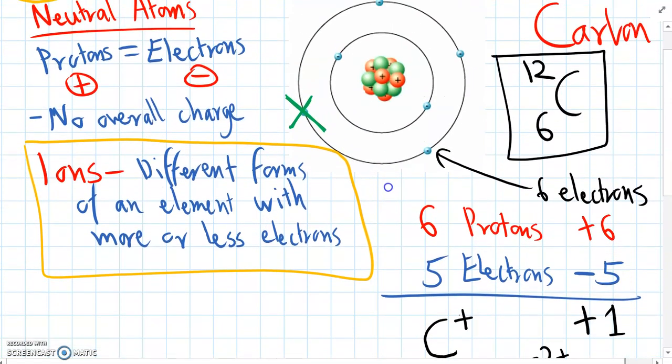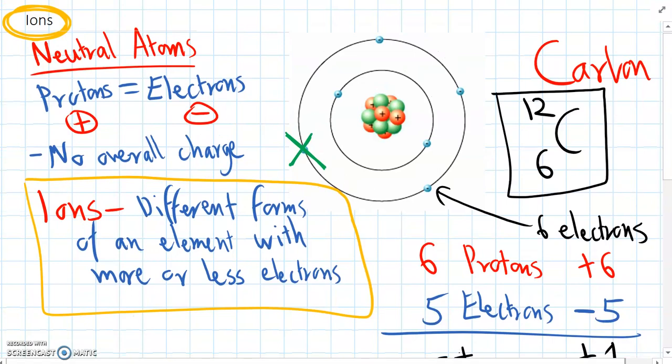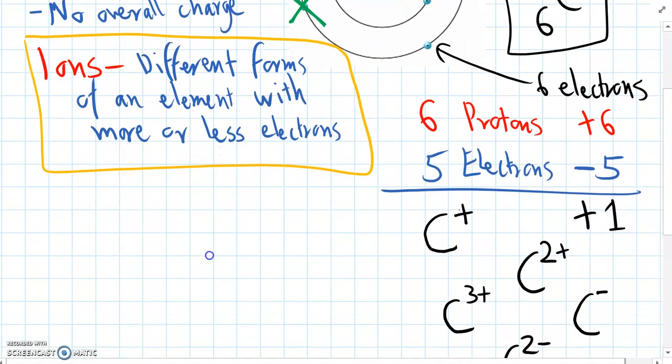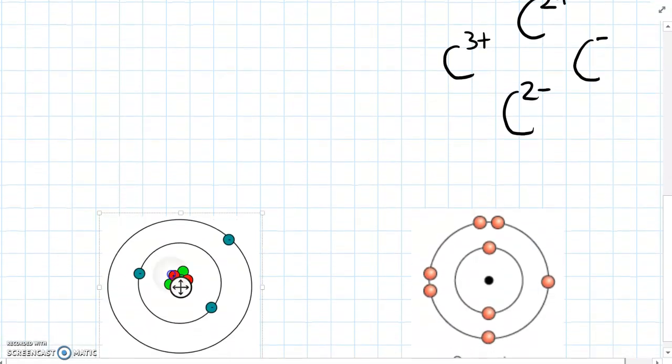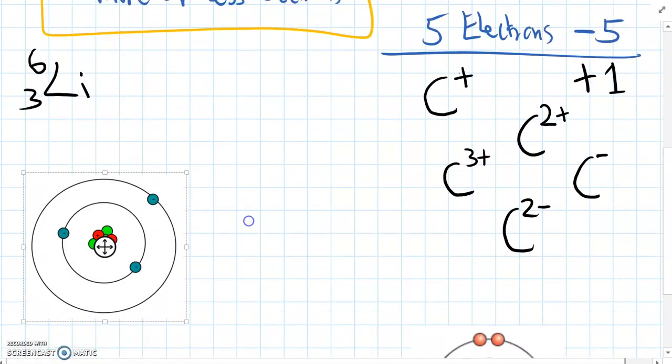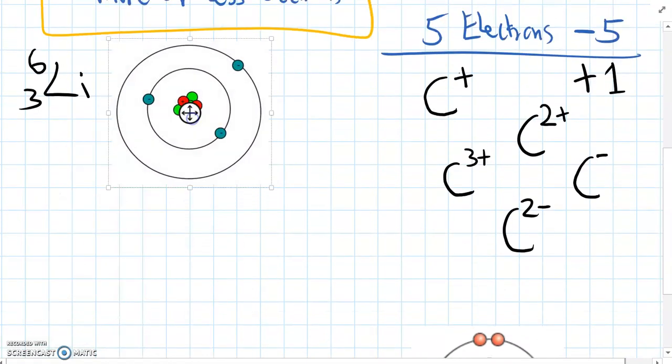So carbon actually doesn't make ions very readily, but most other elements, they like to make ions. So what we'll do is we'll look at lithium next. Remember lithium's element number three, and it's got a mass number of six.